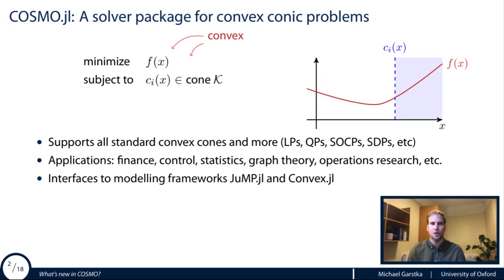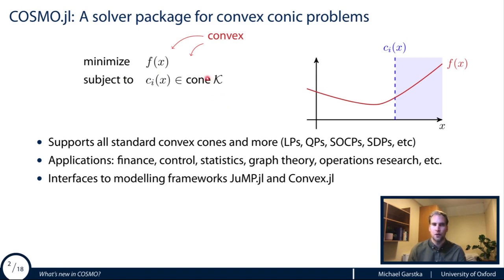Just a quick recap about this package. It's a solver for convex conic problems — problems that can be written in this form. You're trying to minimize a convex objective function subject to certain conic constraints. The intuition is that you're trying to find a vector x that minimizes this function, and you might have certain constraints, for example that x has to be higher than some value, and in this case the optimizer could be found at the intersection point.